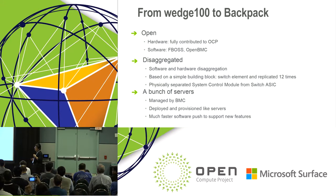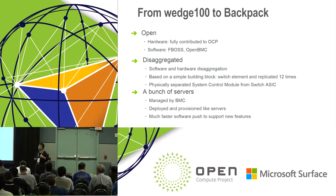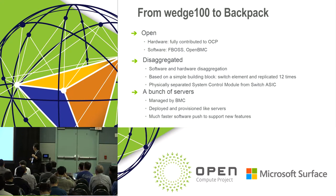The whole Backpack actually consists of 12 switch elements. The third principle is that in order to support our DC operations, we physically separate the control module from the switch. The third model we believe is we want to manage our switch like a server. The whole Backpack chassis is like a bunch of servers, managed by BMC, deployed and provisioned like a service — just like a regular Facebook server. This architecture enables much faster software push and updates; we can support new features and fix bugs very quickly, sometimes with a weekly push.